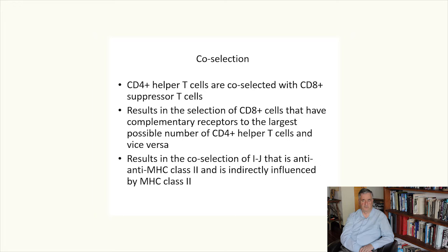We are explaining the IJ phenomena in terms of co-selection. CD4 plus helper T cells are co-selected with CD8 plus suppressor T cells. This results in the selection of CD8 plus cells that have complementary receptors to the largest possible number of CD4 plus helper T cells and vice versa. This results in the co-selection of IJ that is anti-anti-MHC class 2 and is indirectly influenced by MHC class 2.